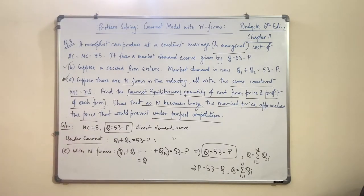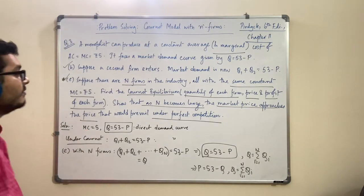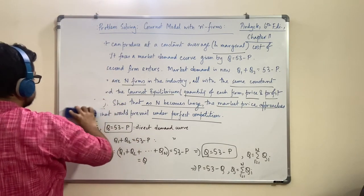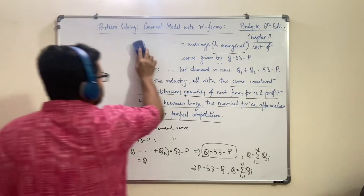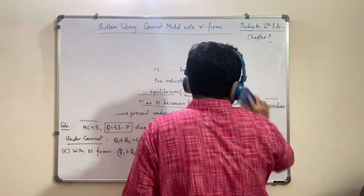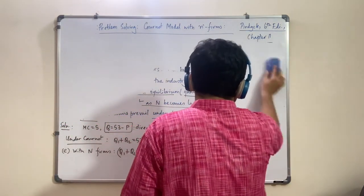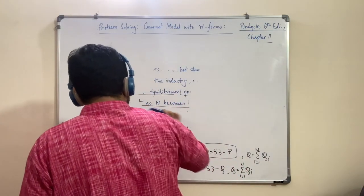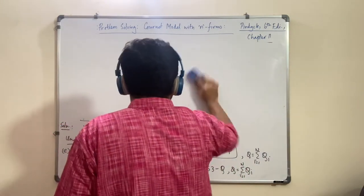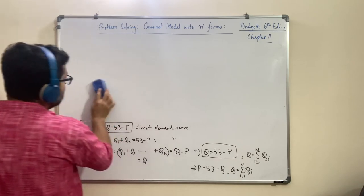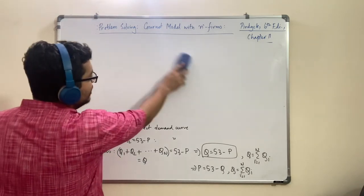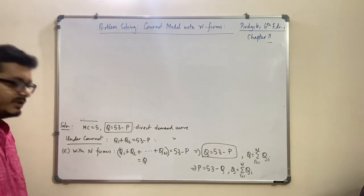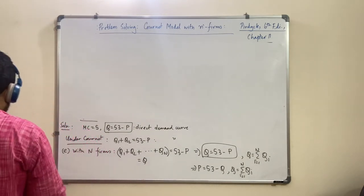The first order condition is ∂π / ∂Q1 = 0. The FOC is: 53 minus 2·Q1 minus the sum of Qj for j not equal to 1 (i.e., from j=2 to N) minus 5 = 0, which gives 53 minus 2·Q1 minus the sum of Qj (j≠1) minus 5 = 0. Following the earlier approach, we keep one Q1 separately — take one out and add it back — so the reaction function / best response of firm 1 becomes expressible in terms of capital Q.